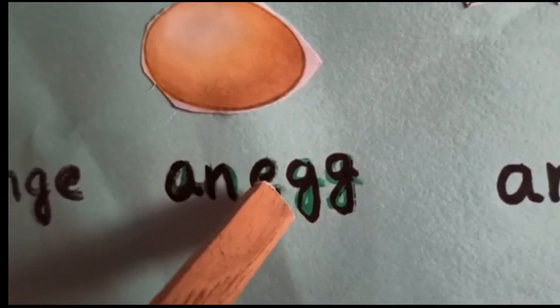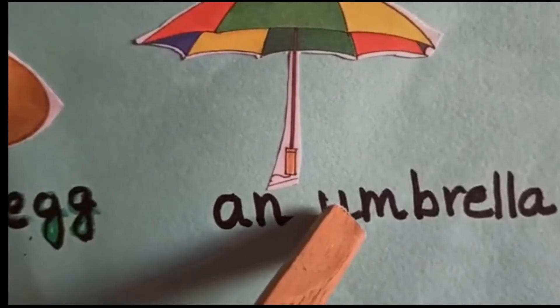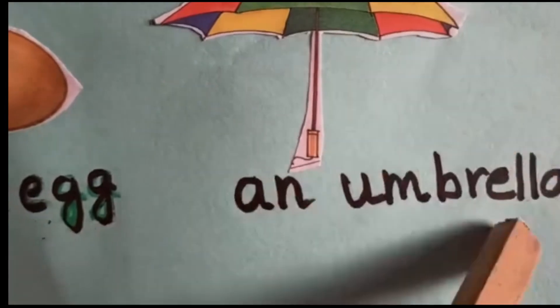Here first letter E is a vowel. An umbrella. First letter U is a vowel. That's why an umbrella.